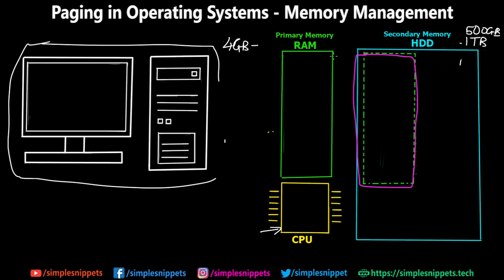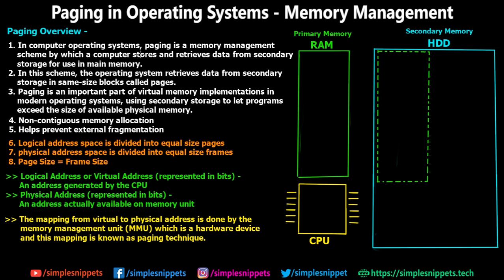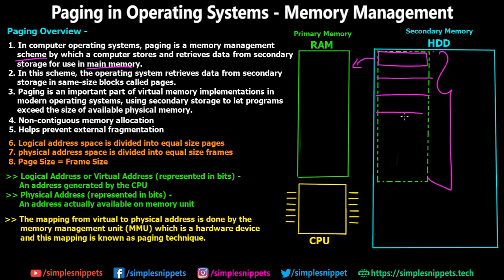In a computer operating system, paging is a memory management scheme by which a computer stores and retrieves data from secondary storage for use in main memory. Some part of secondary memory stores programs, and depending on need, data is retrieved into the physical memory. The operating system retrieves data from secondary storage in same-size blocks called pages. The secondary memory is divided into equal-sized blocks — for example, each block could be 2 KB.